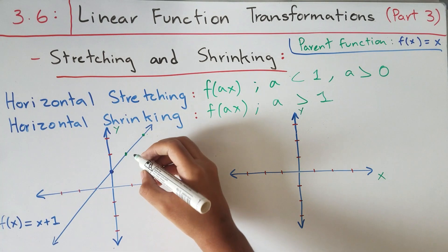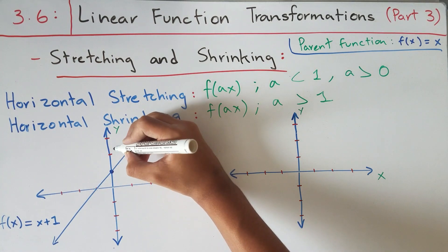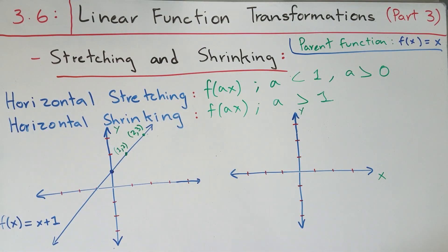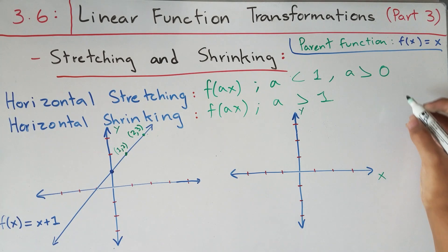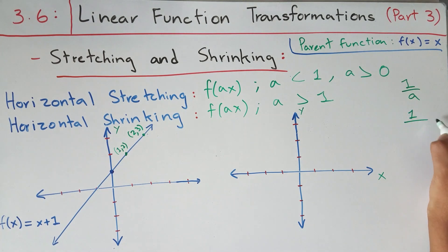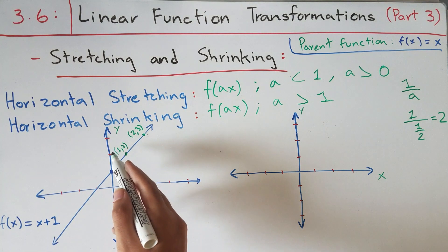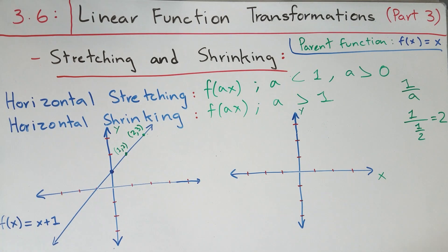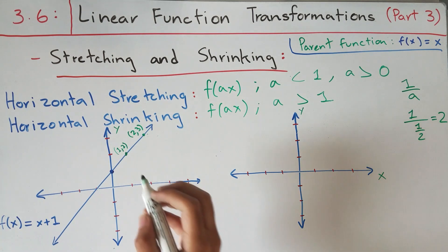We have the point one comma two, and the second point two comma three. One thing to note: when stretching or shrinking horizontally, your factor a is being multiplied by x, but your actual stretch factor will not equal a — it will equal one over a. So with a equaling one half, my stretch factor is one over one half, which simplifies to two. This means we're stretching all x values on this function by a factor of two, multiplying all x coordinates by two while the y values remain the same.